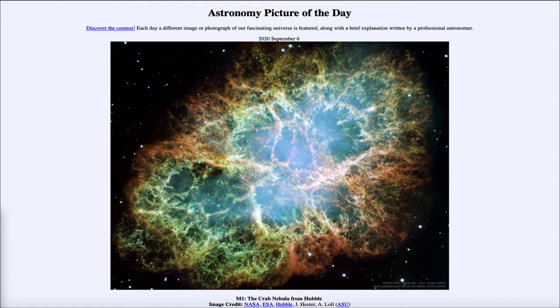This is a Hubble Space Telescope image of the first object in Charles Messier's catalog, cataloged as M1.